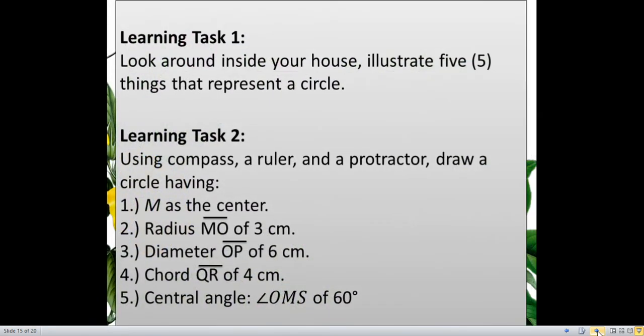So, we're done with the examples. So, learning tasks, this is the things that you're going to do now on a piece of paper. For the first task, you need to look around inside your house. Illustrate five things that represent a circle. Take note, if I say illustrate, it means you need to draw. Draw five things that represent a circle.